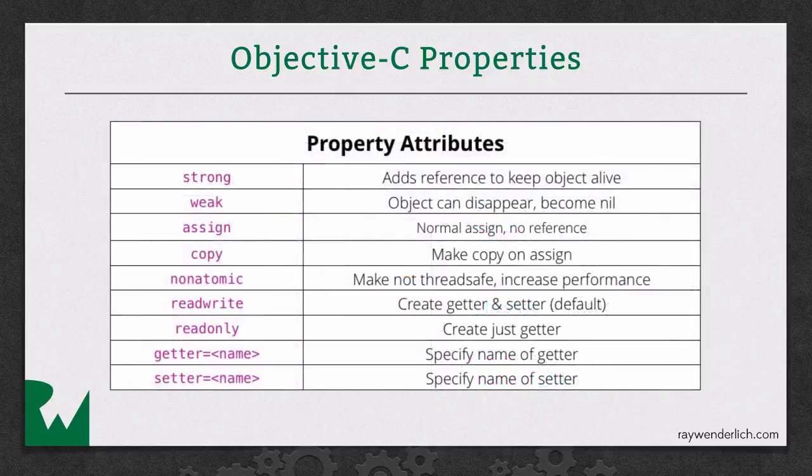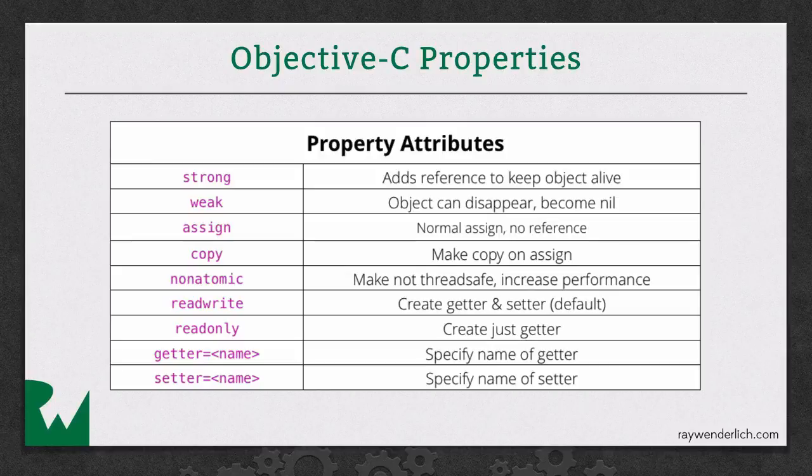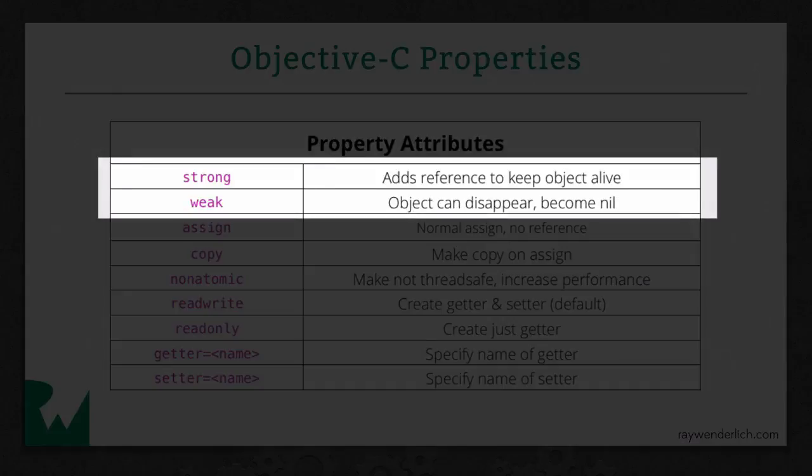Let's take a look at the different property attributes you can set when you create a property. So the one thing you can, and by the way, you can select multiple of these, just put one after another with commas. So if you're working with a pointer to a class, you have to choose whether it's a strong or a weak reference. And we'll get more into this when we talk about memory management.